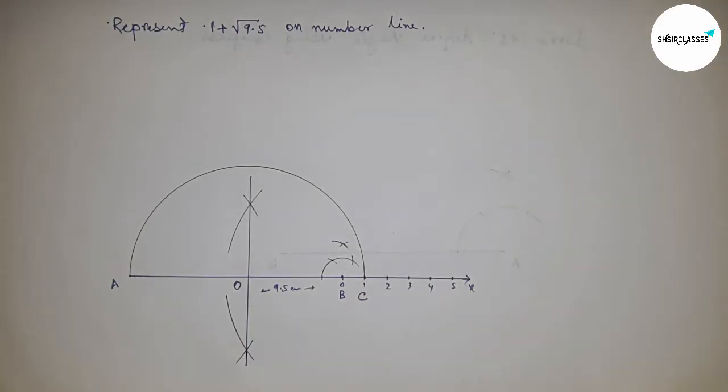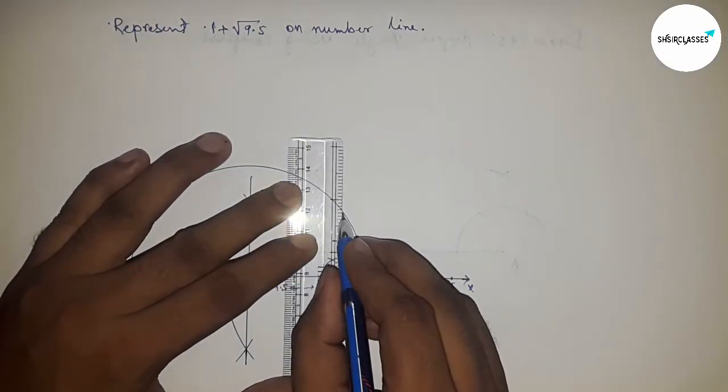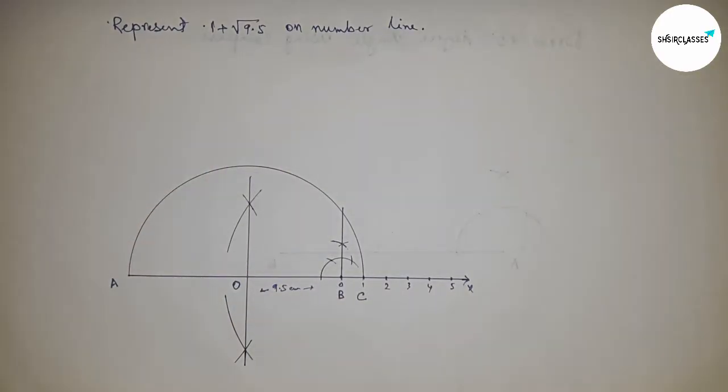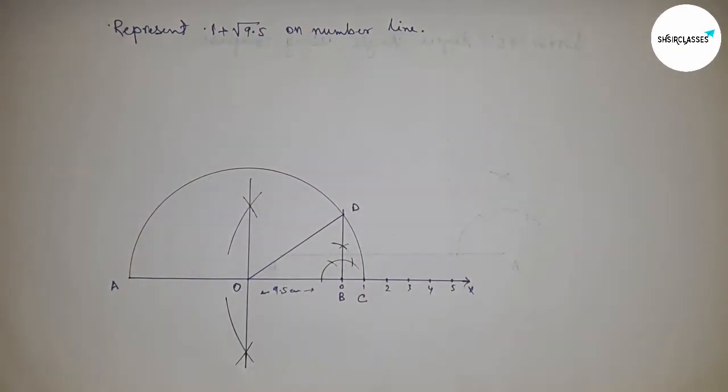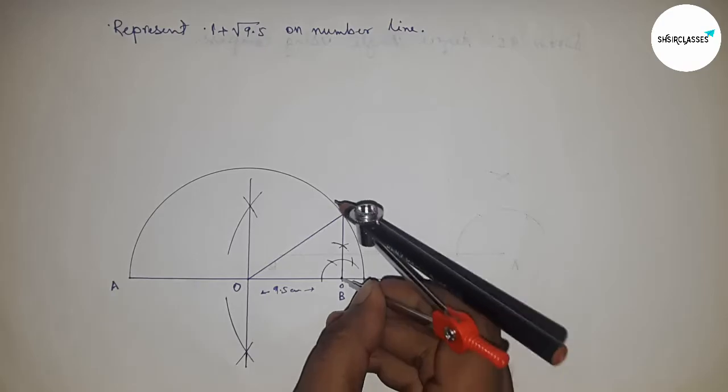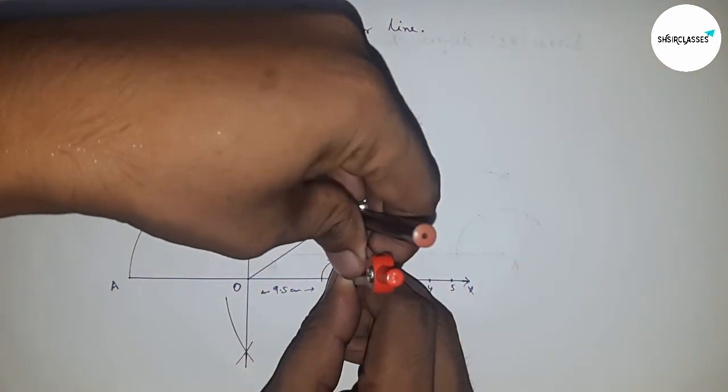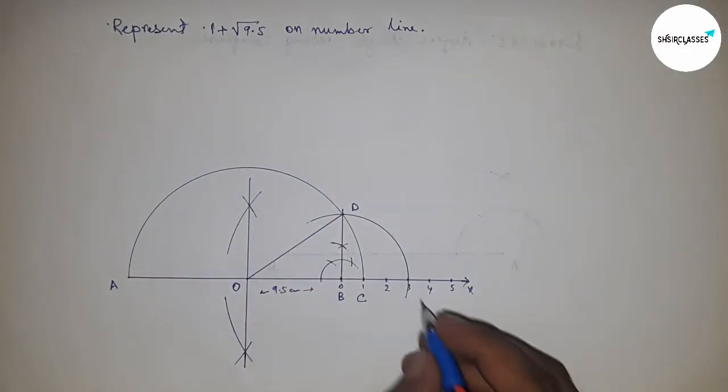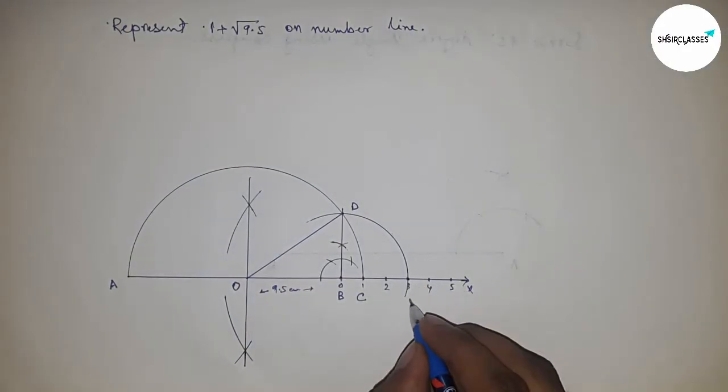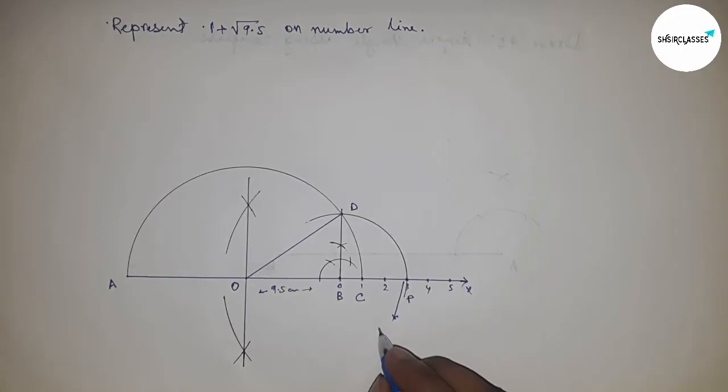Join this line, which meets the semicircle at point T. Next, join OD. Now take the length BD by compass and draw an arc which cuts the number line at a point. This is B, and this is the representation of root 9.5 on the number line.